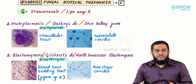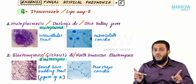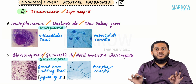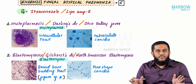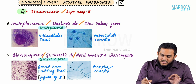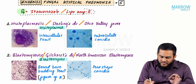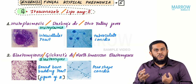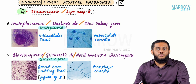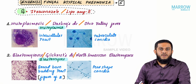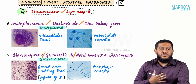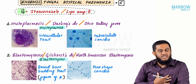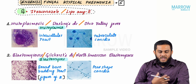All five cause atypical pneumonia, which manifests with cough, chest pain, dyspnea, and no consolidation. Treatment for all five is the same: drug of choice is itraconazole or liposomal amphotericin B. Mild to moderate cases get itraconazole; severe cases get liposomal amphotericin B.